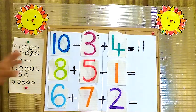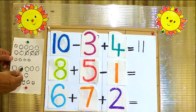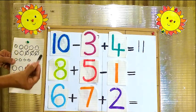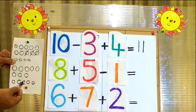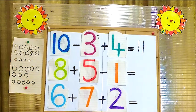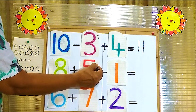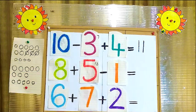We will count all the balls together: 1, 2, 3, 4, 5, 6, 7, 8, 9, 10, 11, 12, 13. What is the answer? Answer is 13. I will write here 13. That's the answer — 8 and 5 is 13.